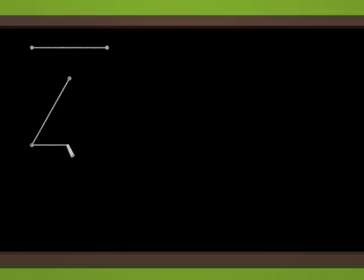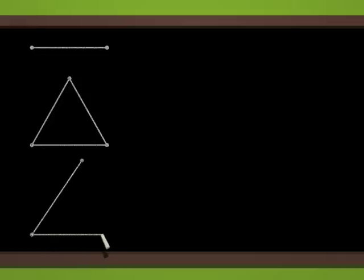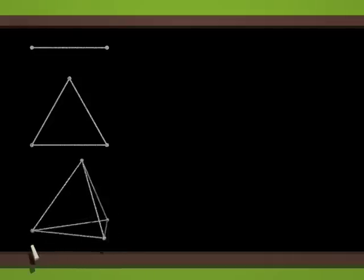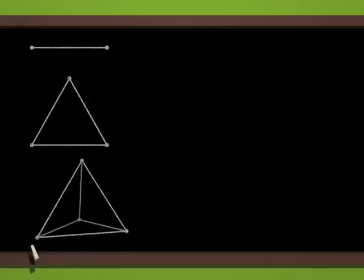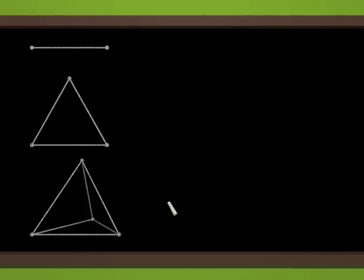As a first attempt at understanding, we shall proceed by analogy. Here is a segment and an equilateral triangle, and finally a regular tetrahedron. Our magical blackboard enables us to draw in space. How can we keep this up in four dimensions? Observe that the segment, the triangle and the tetrahedron have two, three and four vertices respectively. Therefore, we can try to continue with five vertices.